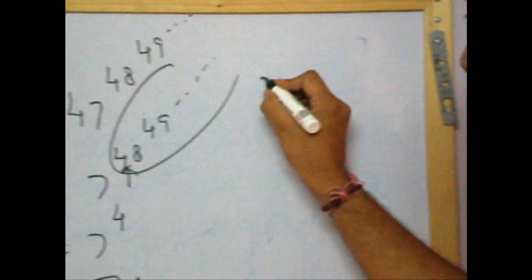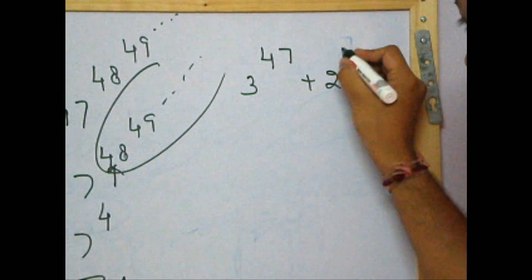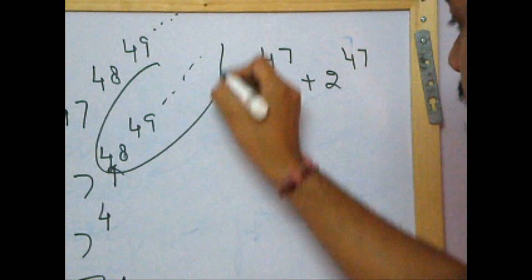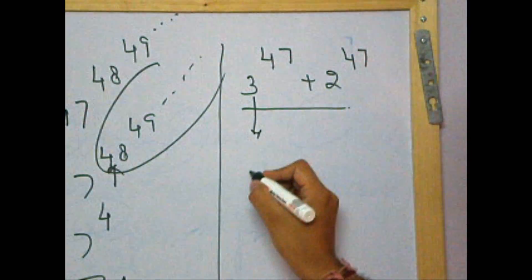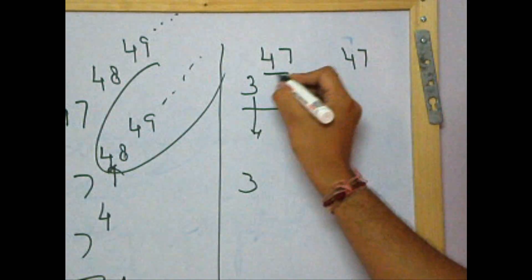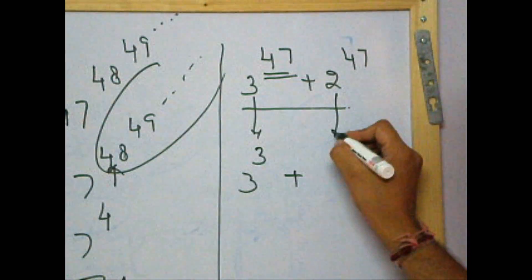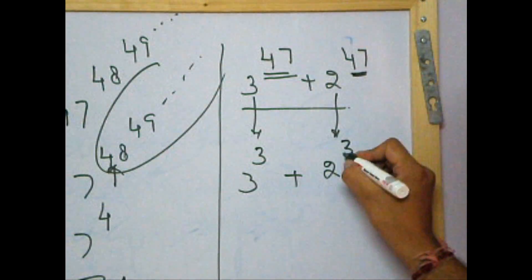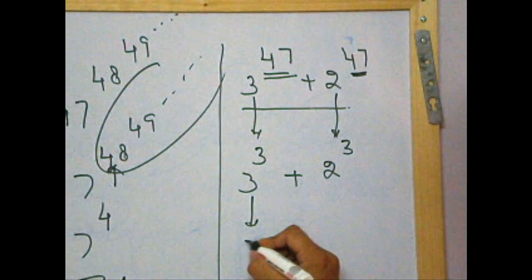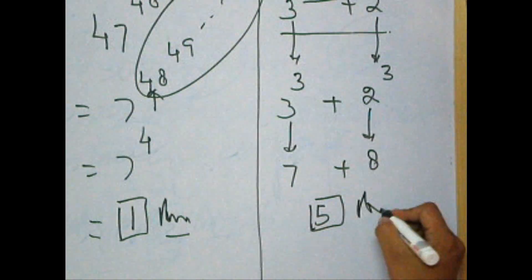Let's go further. Say, question is 3 to the power 47 plus 2 to the power 47, and we want unit digit of this expression. This is as good as 3 to the power, divide the power by 4, find the remainder, that's 3. Plus, this is 2 to the power, divide by 4, remainder is 3. Now, this is 27, so 7. And this is 8, so 8. Sum total 15. Therefore, the unit digit is 5.